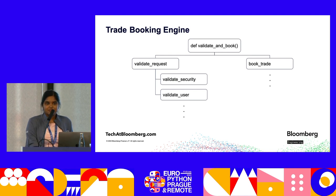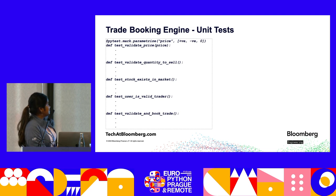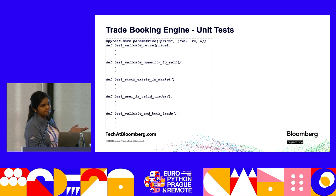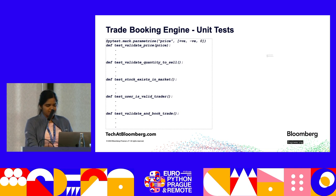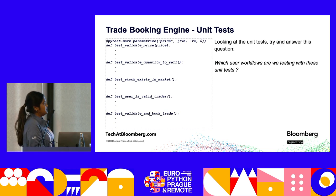Now let's take a look at the trade booking engine's unit tests. We have test validate price, test validate quantity to sell, test stock exist in the market, and a few more. We have also parameterized our tests to cover all permutations — for example, test validate price checks price with positive, negative, and zero values. We have good coverage. But which user workflows are we testing with these unit tests? By looking at these unit tests, can you guess the user workflows?